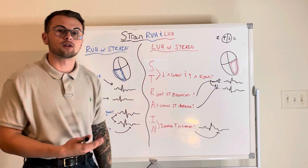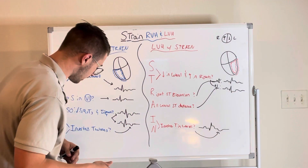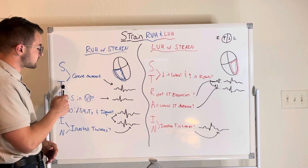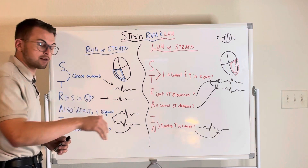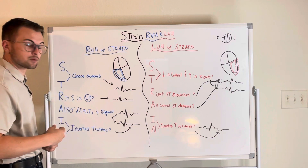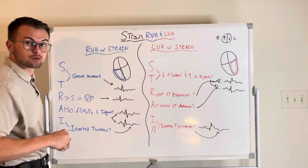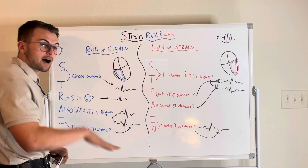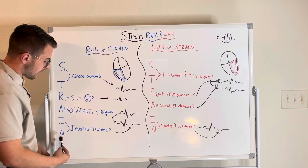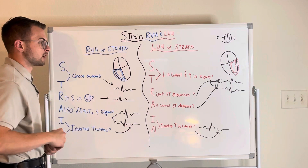So when we put it all together, what is RVH with strain? All we have to do is remember the word STRAIN: an ST segment that is concave downward, an R that is greater than S in lead V1, checking for the S1, Q3, T3 pattern and biphasic T waves, and lastly IN stands for inverted T waves, which we will likely see with RVH with strain.